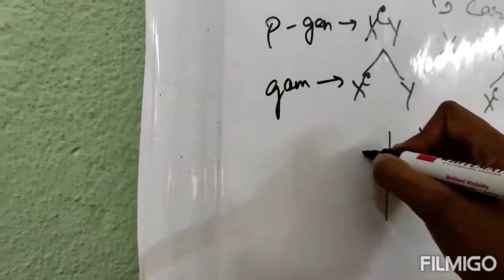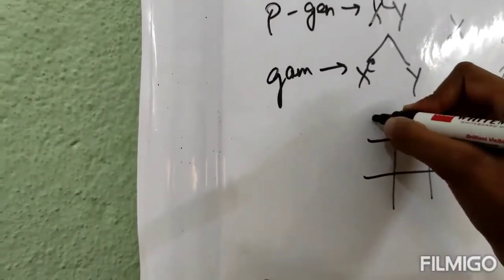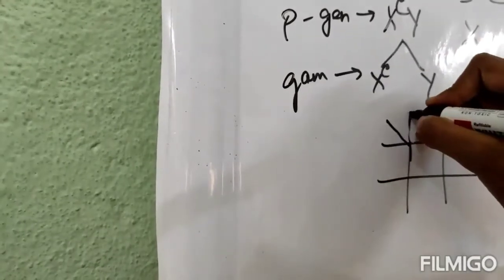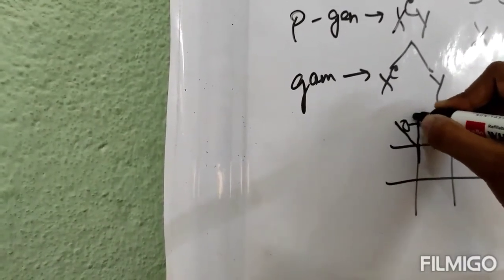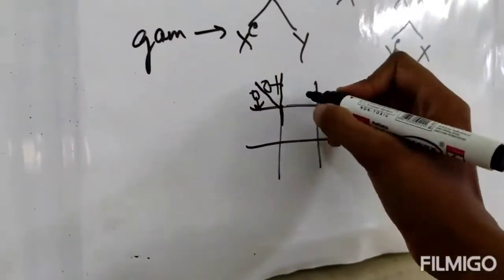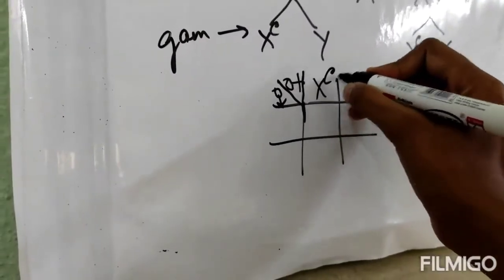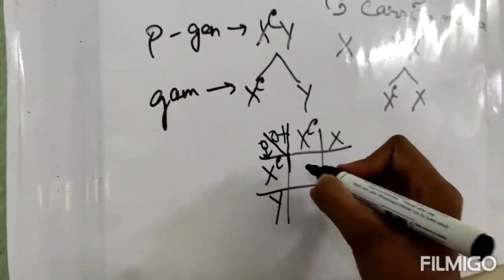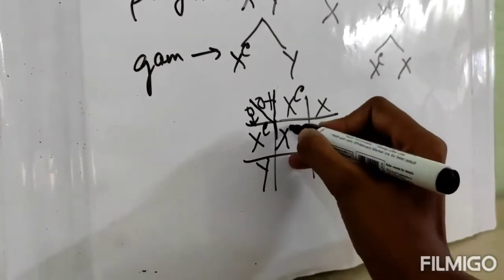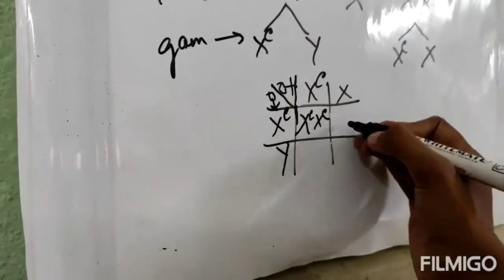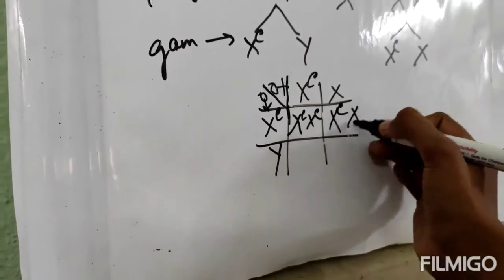Now for the offspring, the mother is having X^C and X, and the father is having X^C and Y. X^C will be multiplied with both of them — giving us X^C X^C. And over here, X^C and X.